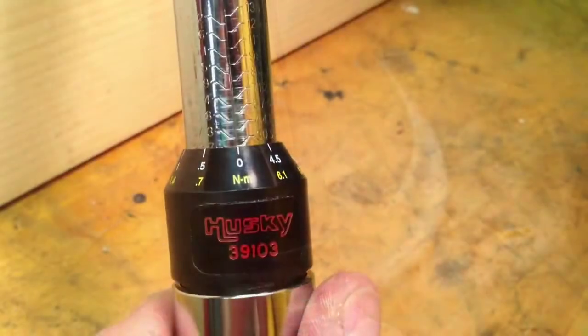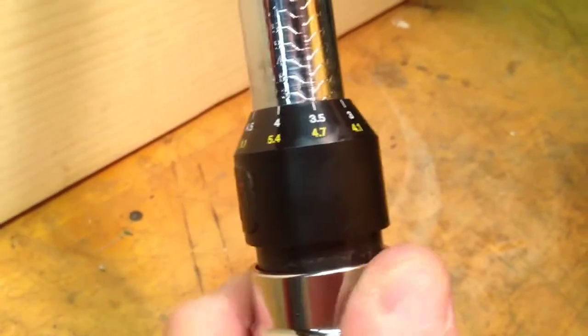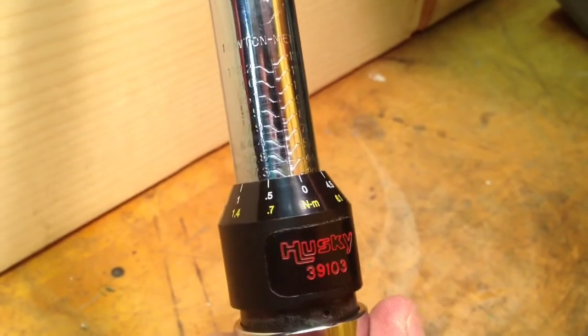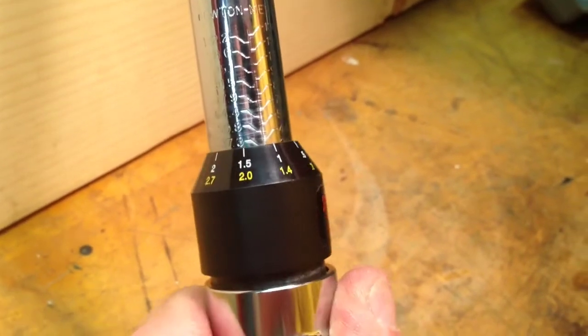And if your specifications are calling for newton meters, on the back side is the measurement for newton meters and each full turn of the handle will get you 6.8 newton meters of torque.